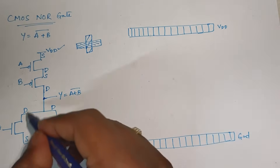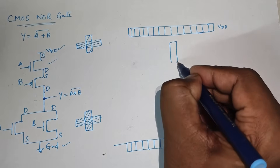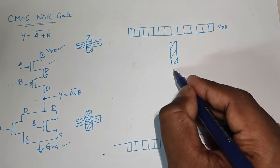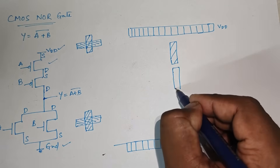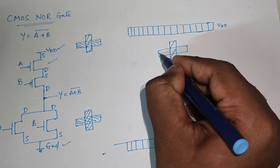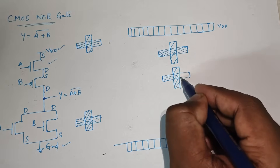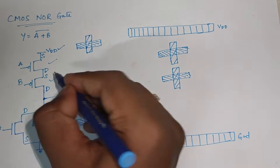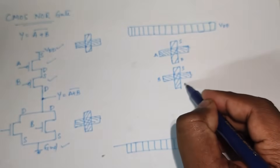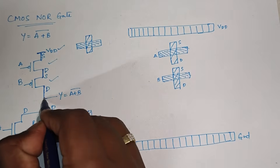First let me place the pull-up transistors. Vertically I am going to draw a P diffusion for the first transistor, and another P diffusion for the second transistor. Then horizontally we have polysilicon for gate input A and polysilicon for gate input B. So this gives us two pull-up PMOS transistors with inputs A and B. Now this side is the source and this side is the drain. We need to connect the source to VDD and the drain to the output Y.